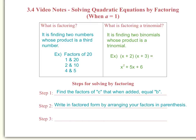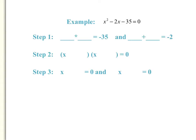Now the third step is to set each binomial equal to 0 and solve each one for x. Now let's do an example together. Our example is x squared minus 2x minus 35 equals 0. Our first step is to find the factors of c, which is negative 35, that when added would equal the b value, which is negative 2. So let's do that.